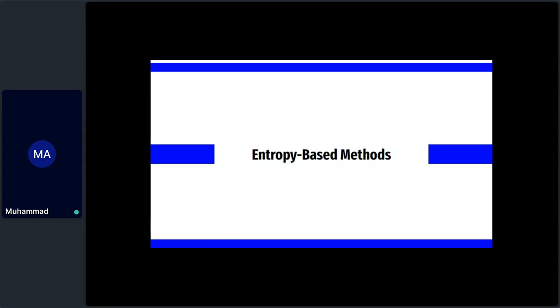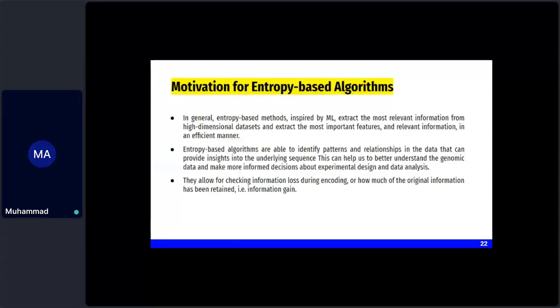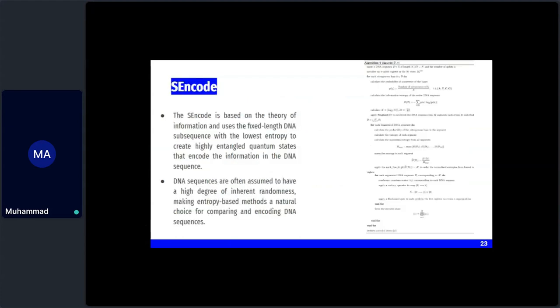Moving on to entropy-based methods, there are three types. The first, S-encode, takes a DNA sequence and desired number of qubits and performs encoding directly. The second and third, NZ22 and NZ23, take the DNA sequence and compare it against a database reference sequence to evaluate quality of the mapping between the two.